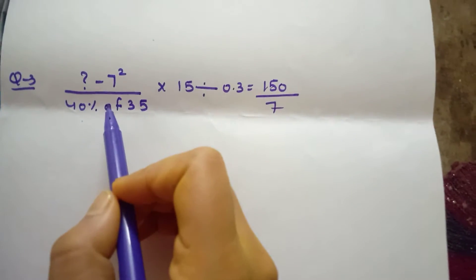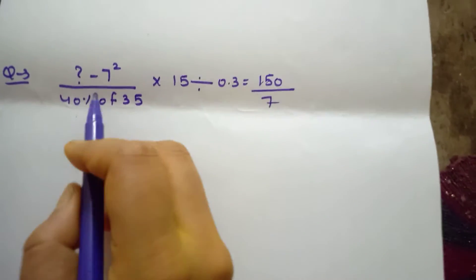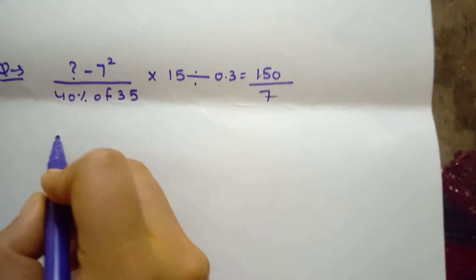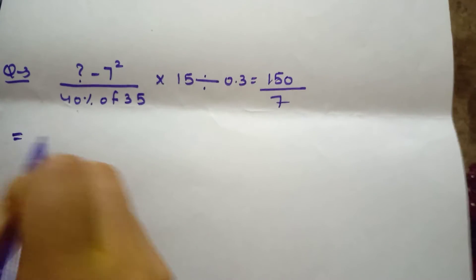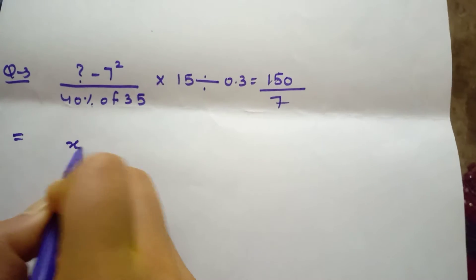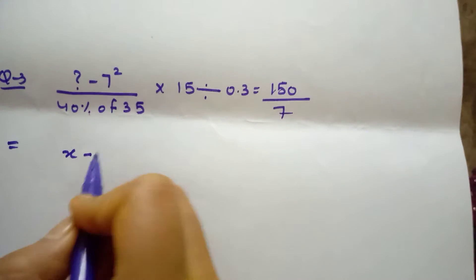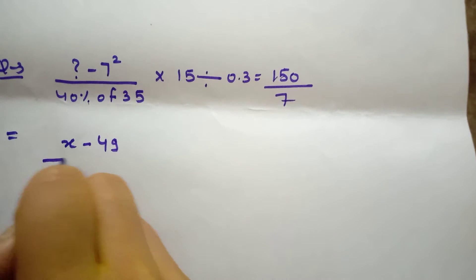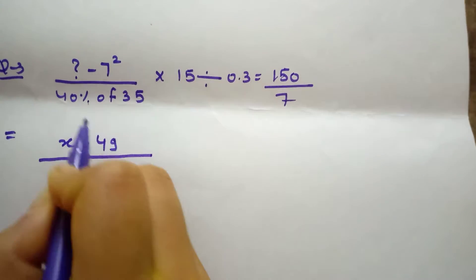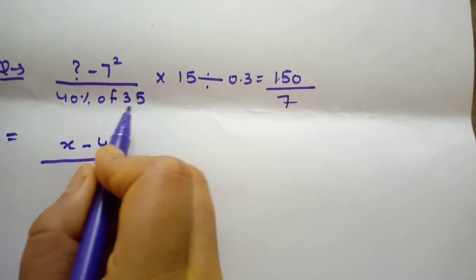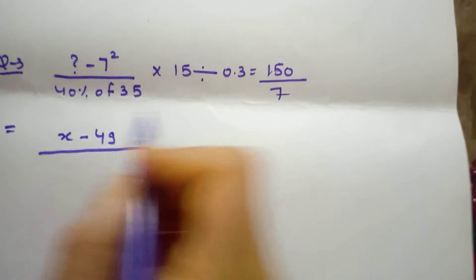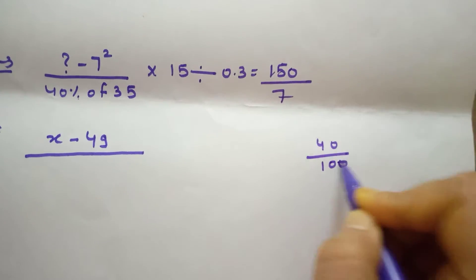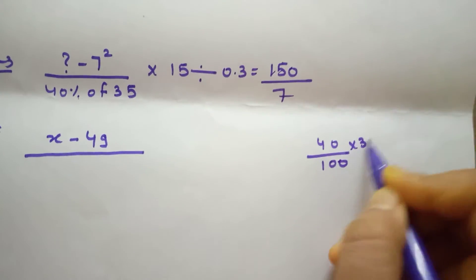Simplification. x minus 7 squared: 49 divided by 40% of 35 — that is 40 divided by 100 into 35.